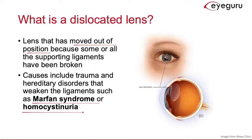On the right is a picture of an upward lens dislocation, also sometimes known as ectopia lentis. You can see here that the lens is displaced superiorly, allowing you to see the inferior border of the lens through the pupil.